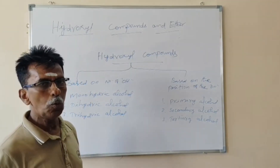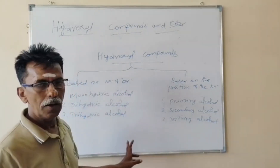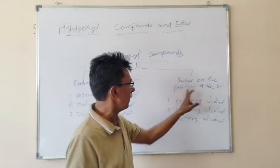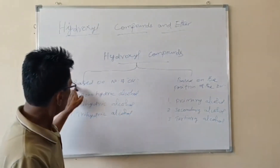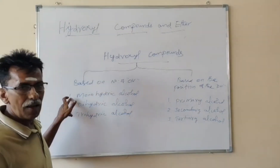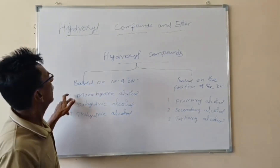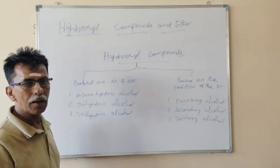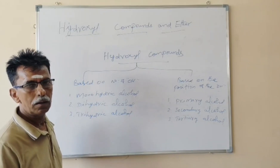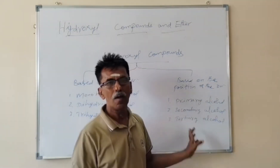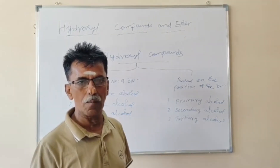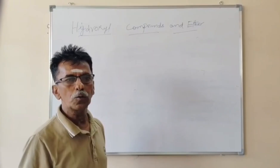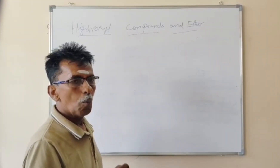That Hydroxyl derivative can be classified into two types: based on the number of OH groups and based on the position of the OH groups. We can classify the Hydroxyl compound into Monohydric Alcohol, Dihydric Alcohol, and Trihydric Alcohol. Based on the position of the OH, we can classify into Primary Alcohol, Secondary Alcohol, and Tertiary Alcohol.